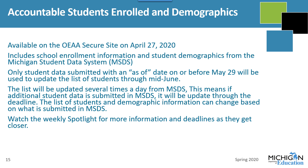Student demographics will be used in assessment and accountability reporting. While schools can continue to update MSDS through mid-June, OEAA will only use student data with an as-of date on or before May 29. Make sure the data available on May 29 is correct. To fix any errors, you need to correct the error in MSDS. Your school or district will have an authorized user for MSDS who can access the system to update the data. There's a page in the Secure Site under the Assessment Registration tab called District and School Contacts that will show you who your authorized MSDS user is. Watch the weekly spotlight for availability and deadline information.